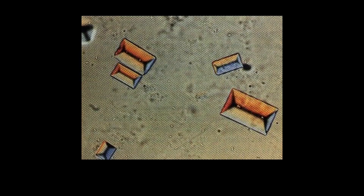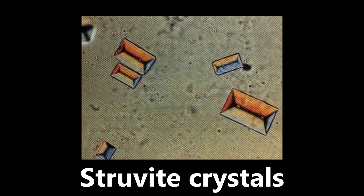This next image shows crystals we need to classify — these are struvite crystals. The composition is ammonium magnesium phosphate. The classic description is a coffin lid-shaped appearance, which you can appreciate in the image. So if you see these boxy rectangular crystals, think struvite crystals.